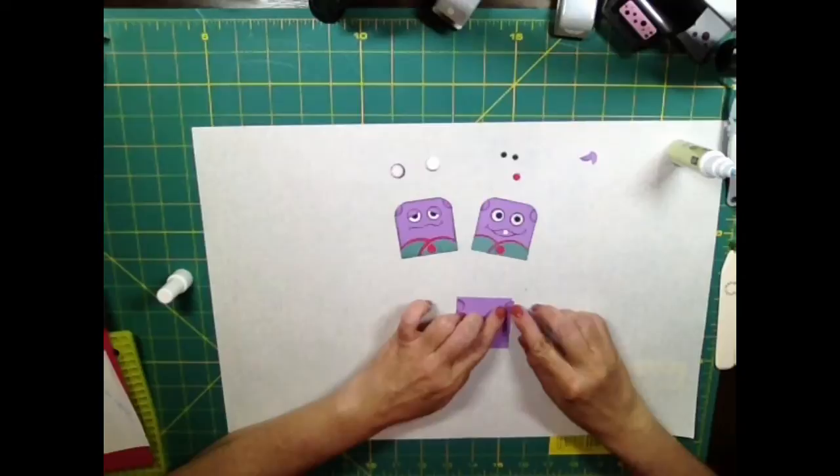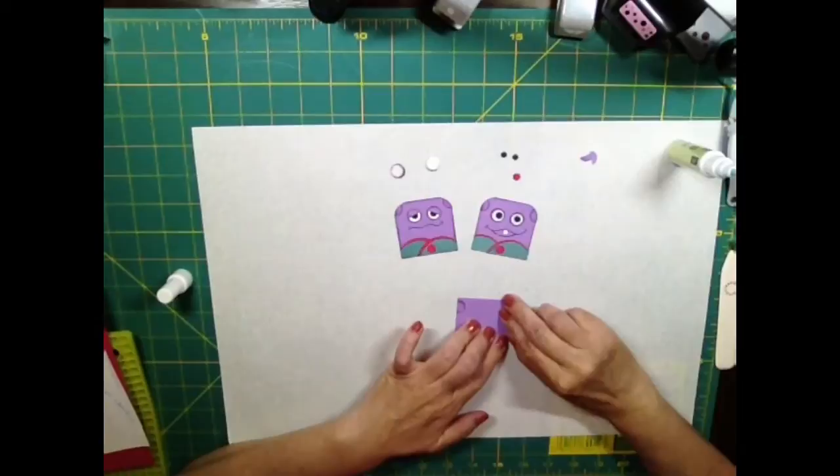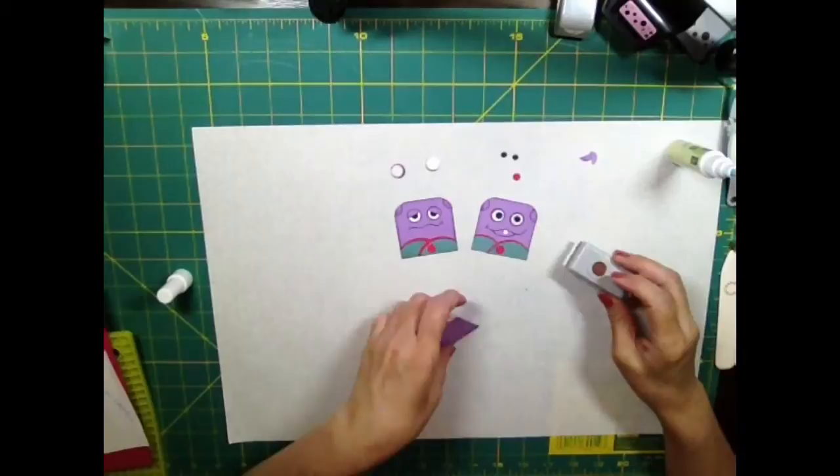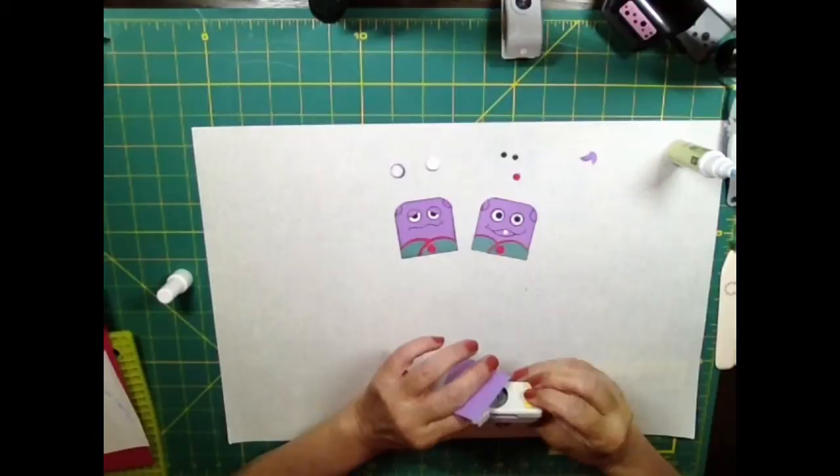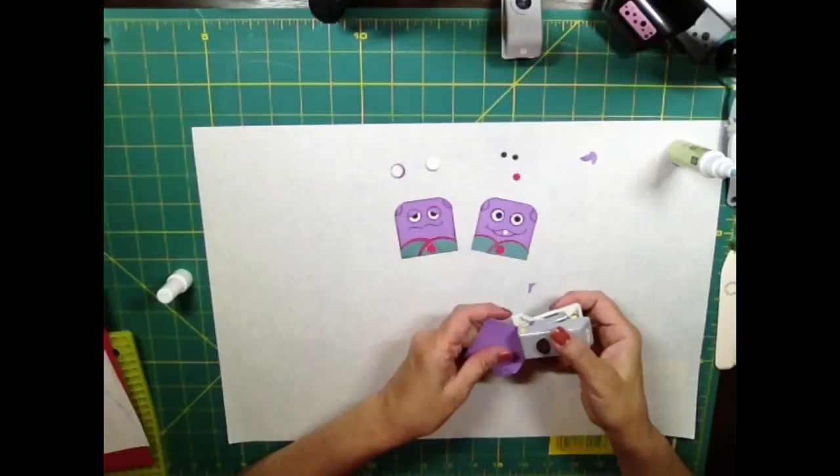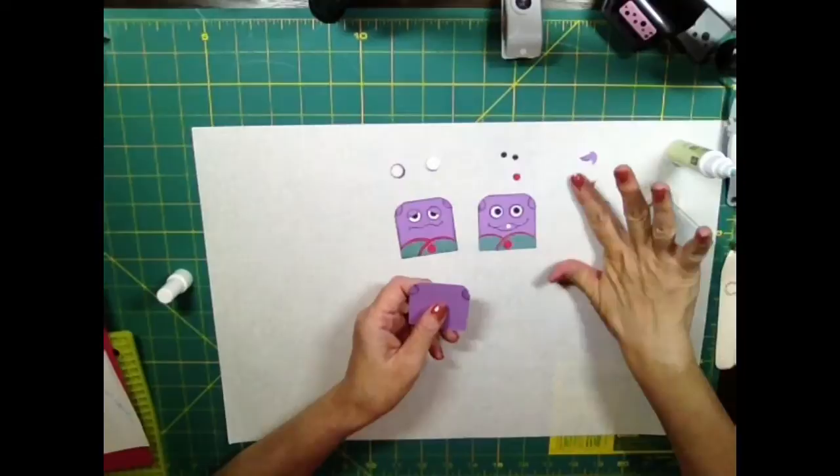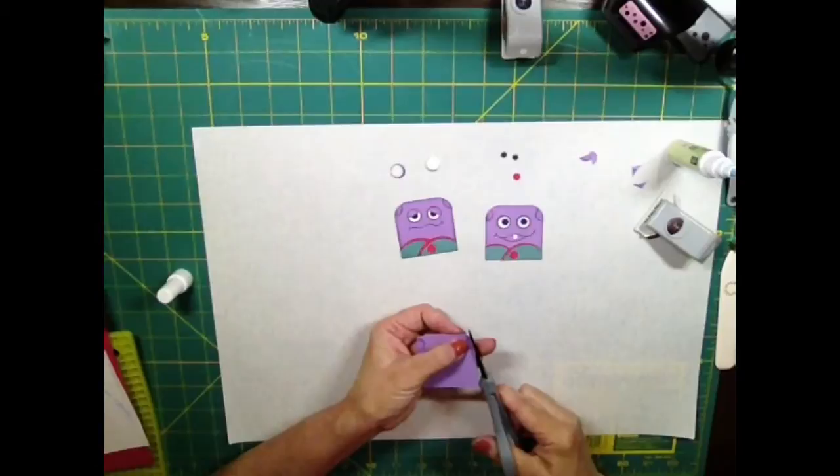And then I'm going to use a corner punch - I need a 1-inch corner punch to punch around the corner like that. Okay, that's the ear. Trim off a little bit here.